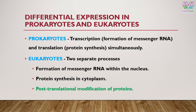Prokaryotic cells do not have a nucleus, whereas eukaryotic cells do. In prokaryotic cells, transcription — formation of messenger RNA — and translation — protein synthesis — simultaneously take place within the cytoplasmic area, as in E. coli. However, in eukaryotic cells, transcription and translation are two separate processes: first, messenger RNA is formed by transcription within the nucleus, followed by protein synthesis in the cytoplasm. In eukaryotic cells there are also post-translational modifications, which will be discussed in another lecture. All these factors need to be considered when selecting the system for your expression vector.